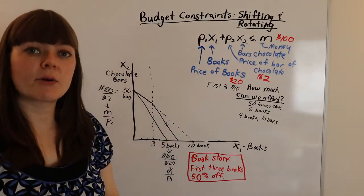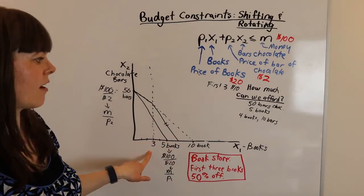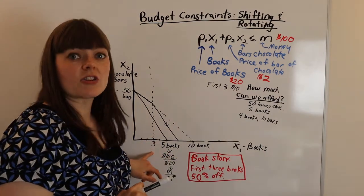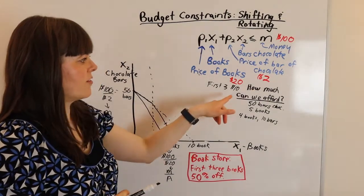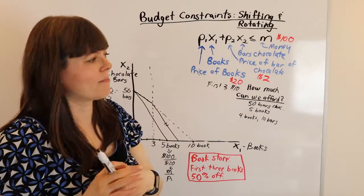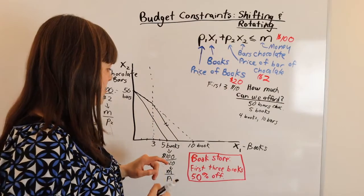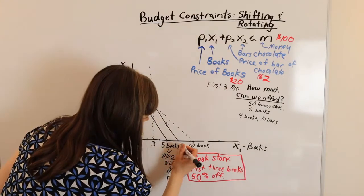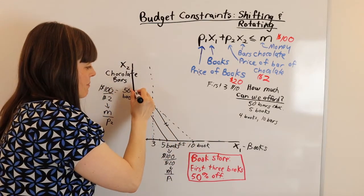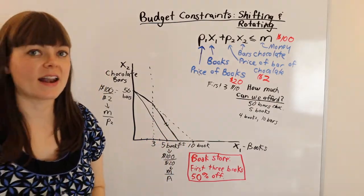And we can figure out how many books can we afford if we only buy books. Well, we're going to buy the first three books for $10 each. So we've spent $30 on books. We have $70 left to spend on books, and those are $20 each. So we can buy three and a half books at $20. So at six and a half books is where this new budget constraint, the kinked budget constraint is going to cross that axis.